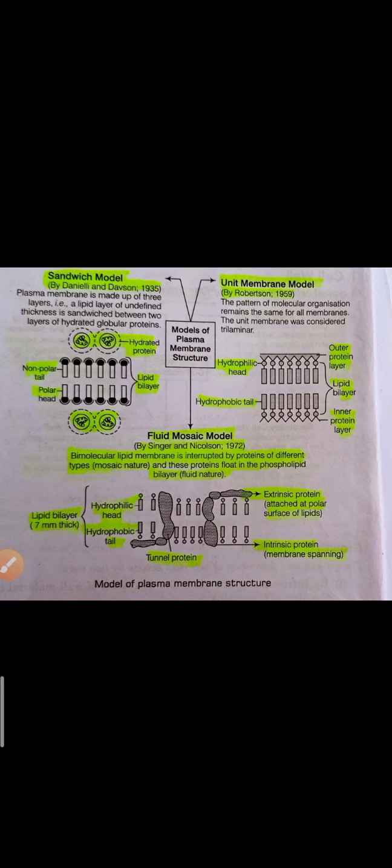If it is removed from the living cell, it works as a semi-permeable membrane. For example, if you dip an egg inside hydrochloric acid, you can observe that the acid breaks down the calcium carbonate present outside the egg, and you can feel one membrane layer present outside the inner content. This membrane works similarly to a plasma membrane.